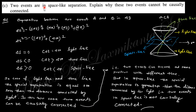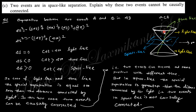The next question: two events are in space-like separation — explain why these two events cannot be causally connected. The separation between two events A and B in four-dimensional spacetime is given by the interval Δs². When Δs² = 0 it is light-like, when Δs² < 0 it is time-like, and when Δs² > 0 it is space-like. In the spacetime diagram, within the light cone lines the region is time-like, and outside is space-like.